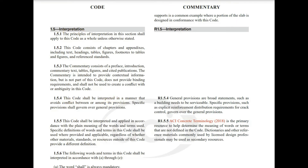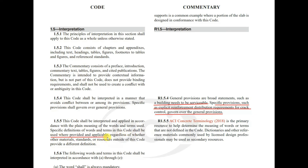Section 1.5 covers interpretation. This code shall be interpreted in a manner that avoids conflict between or among its provisions. Specific provisions shall govern over general provisions — for example, explicit reinforcement distribution for crack control governs over broad statements like 'a building needs to be serviceable.' Section 1.5.5 states that this code shall be interpreted in accordance with the plain meaning of words and terms used. ACI Concrete Terminology 2018 is the primary resource for determining the meaning of words or terms not defined in the code.